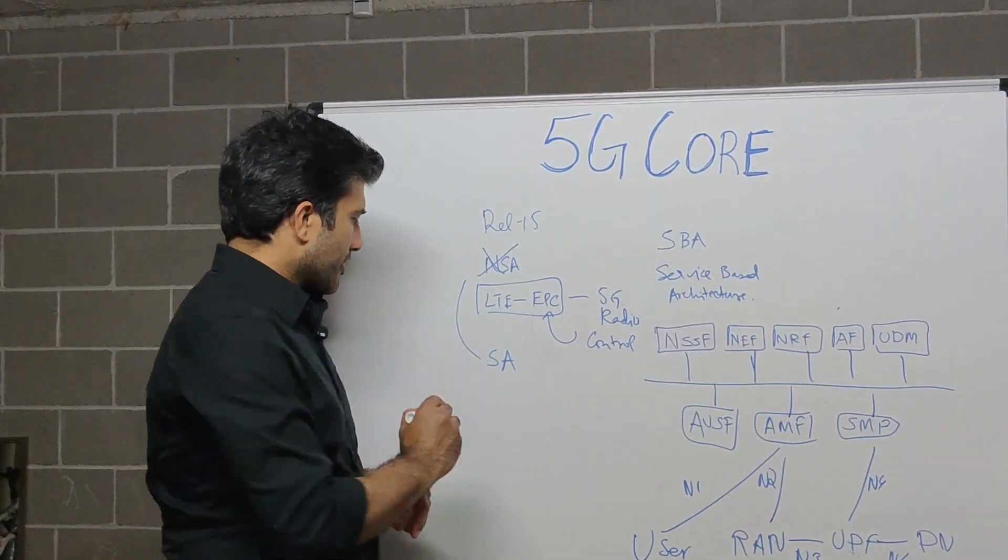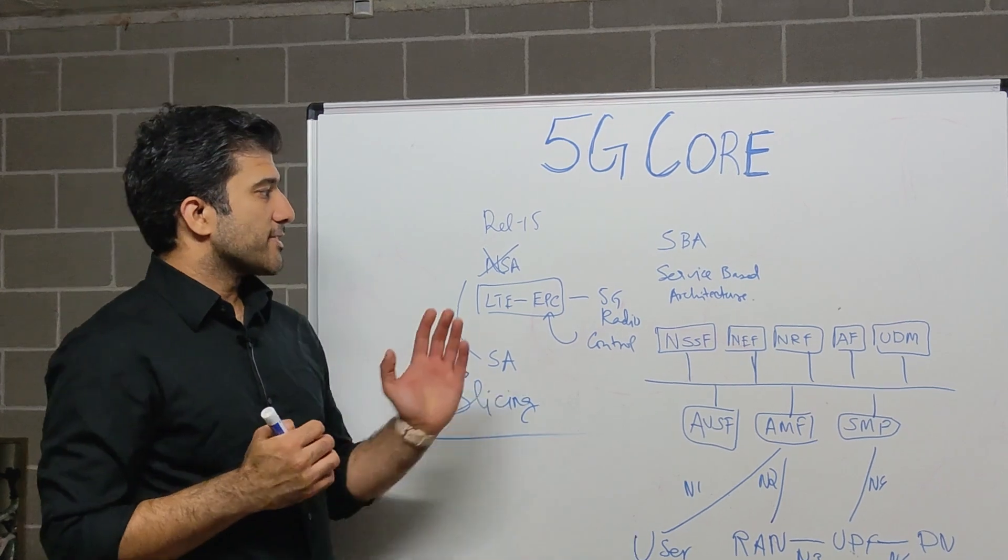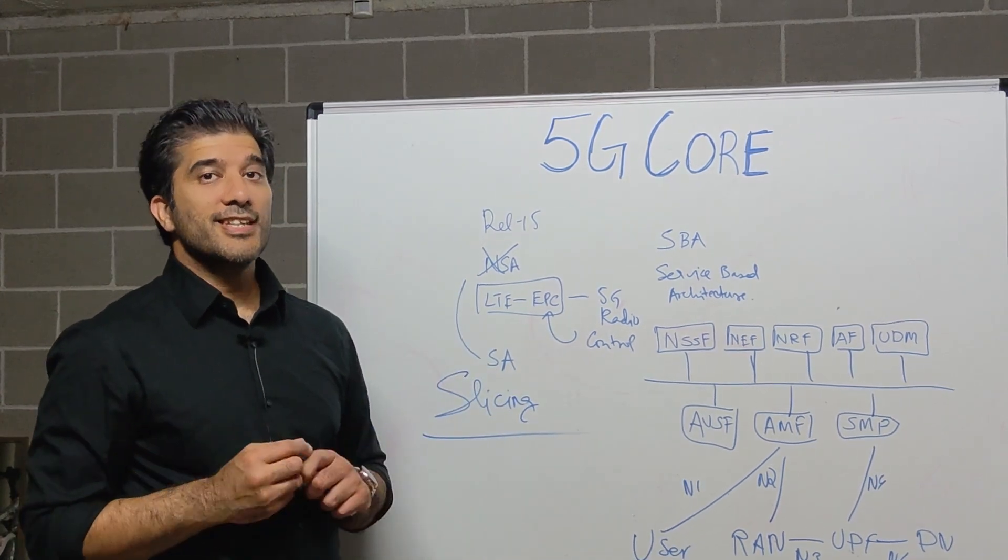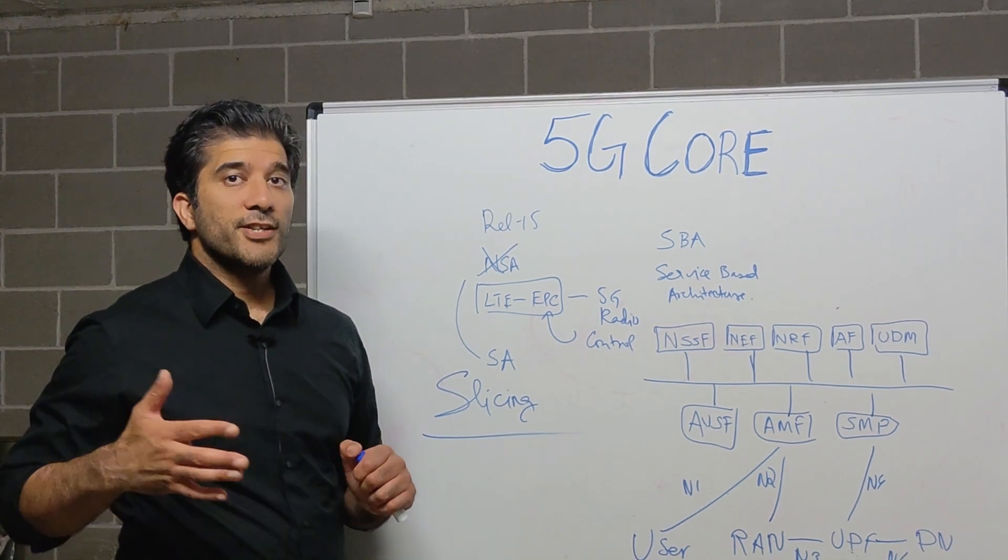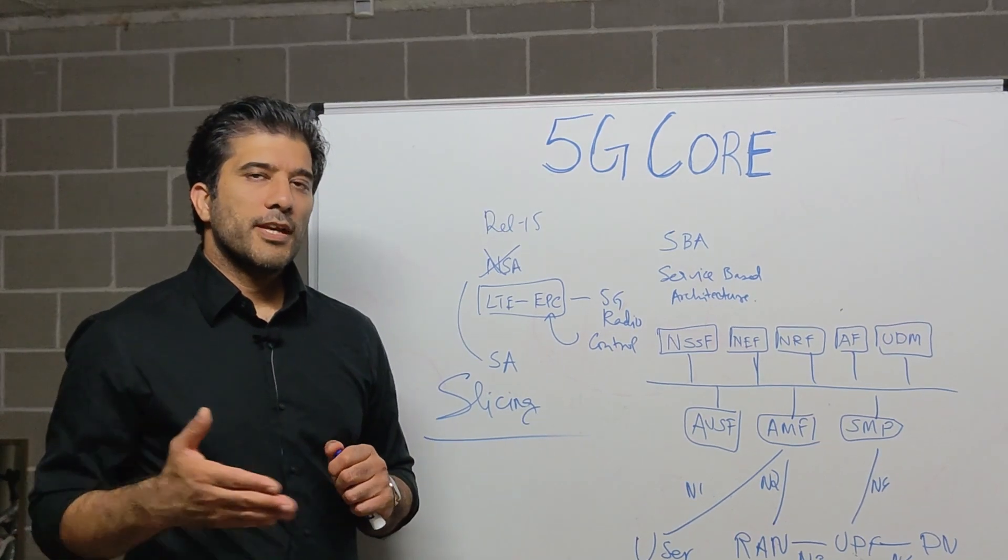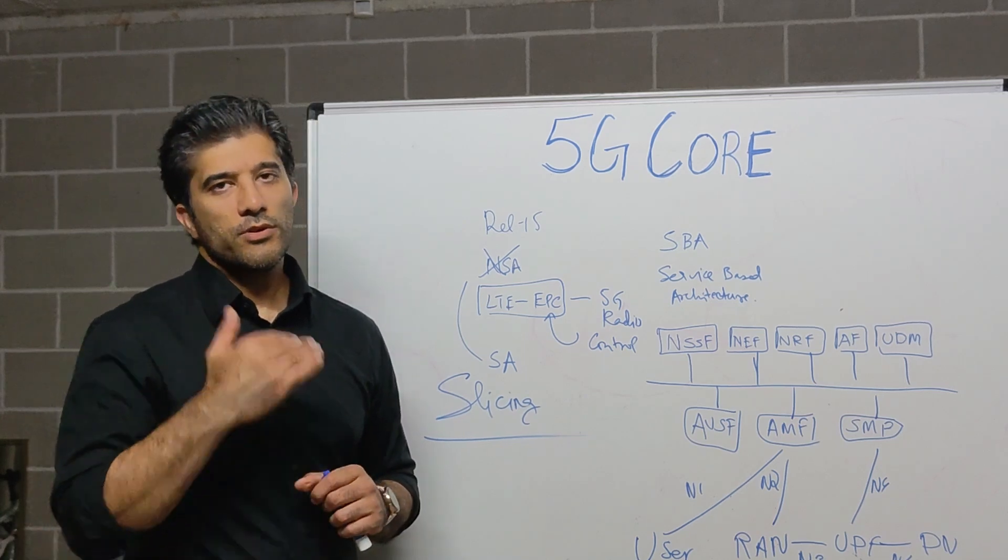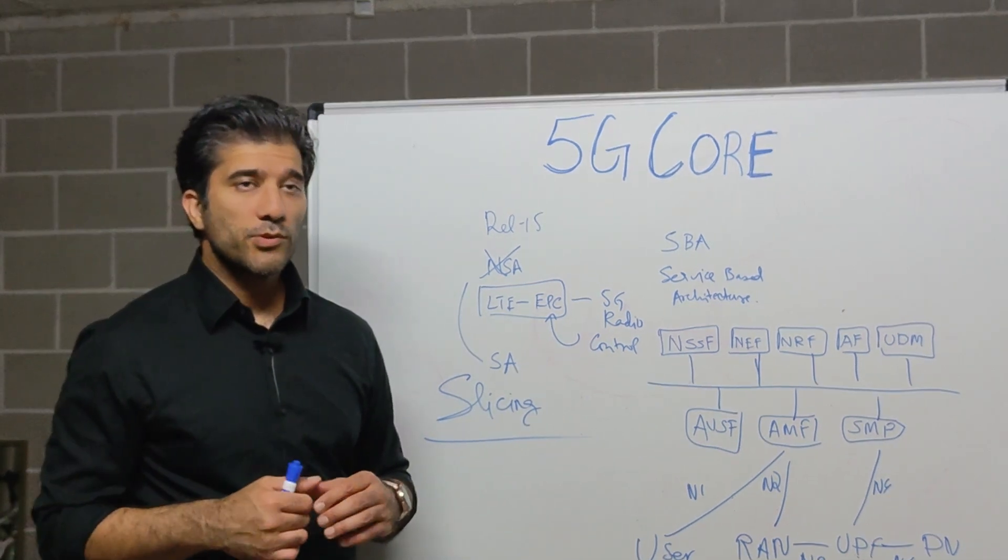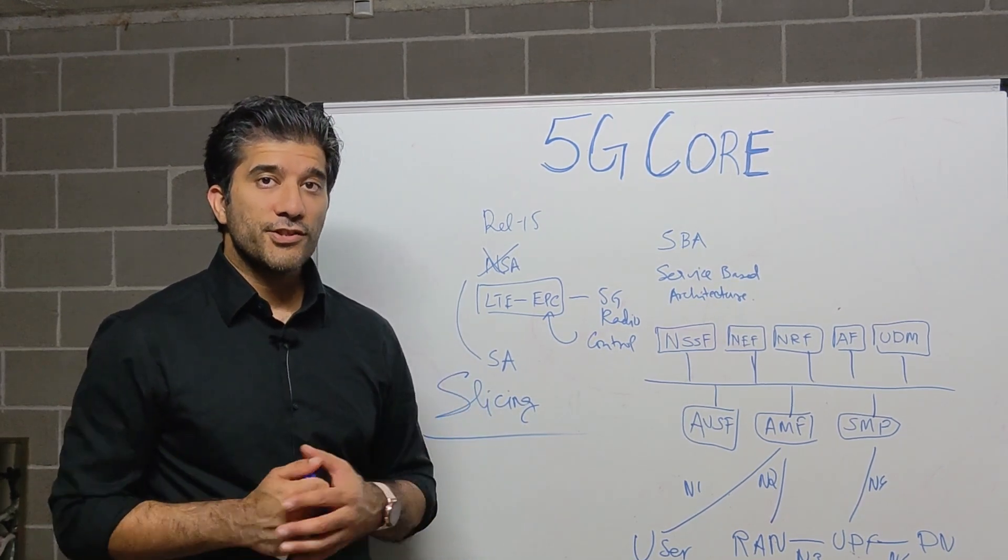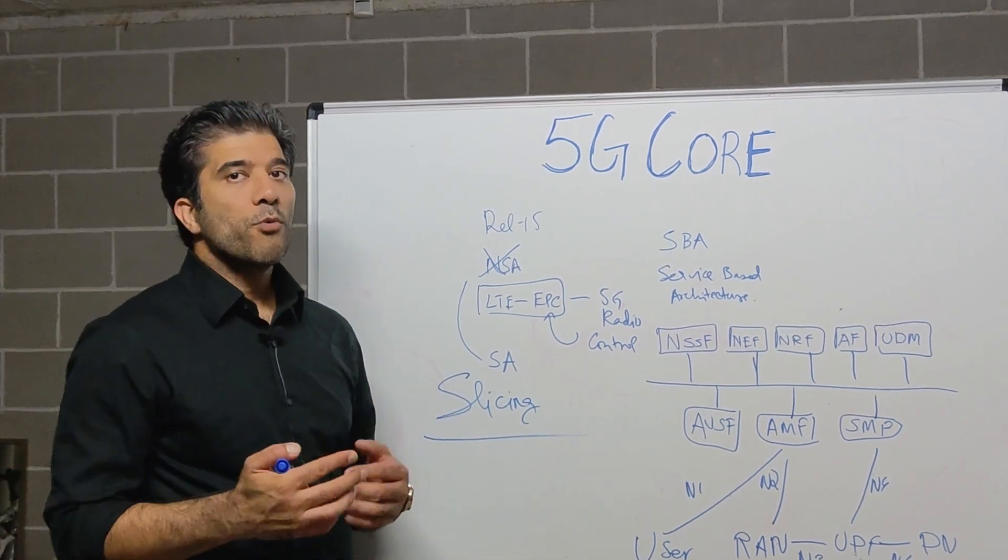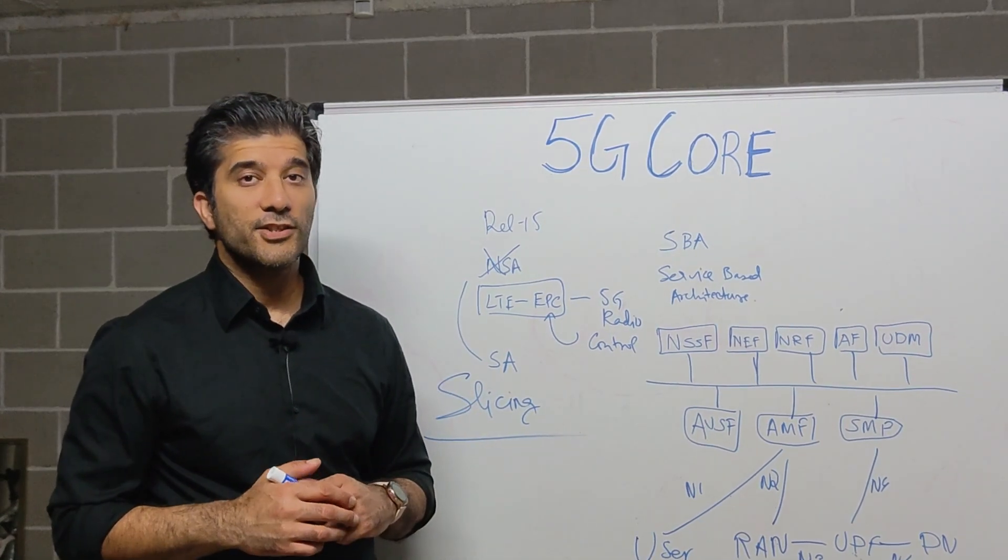Then another part is your slicing. So 5G core gives us the ability to define slices where we do not have to build different physical or software networks for different functionalities. We can actually slice the network into different software based or you can say functionality based networks. So in your one network, you can have a different slice for enterprise, you can have a different slice for fixed wireless, you can have a different slice for low reliability communications. And this is also one very important part of the 5G core. And 5G core has been developed considering the slicing functionality.